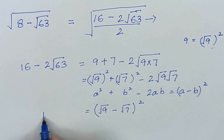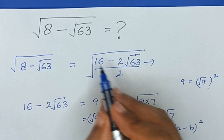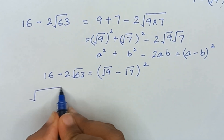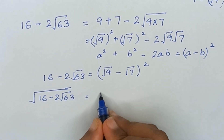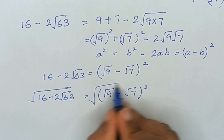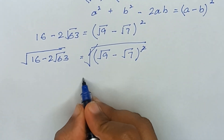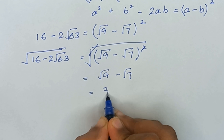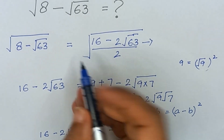So that is the value of 16 minus 2 times square root of 63. But here we have the square root of this whole term. When we take the square root of (√9 minus √7)², the square root and the square cancel out, so it becomes √9 minus √7, which is 3 minus √7.